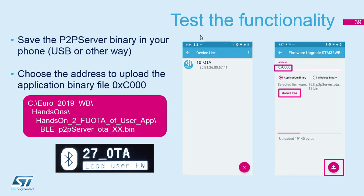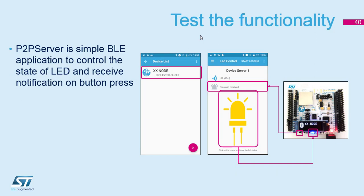What we want to do is put the application — in this case the point-to-point server — store it on the phone, connect to the OTA, select the file in the application, and select the correct offset. This offset is the address in flash where we want to store the point-to-point server user application.